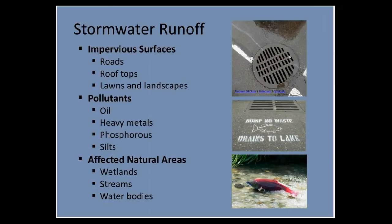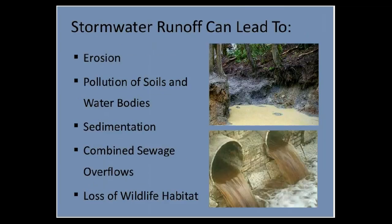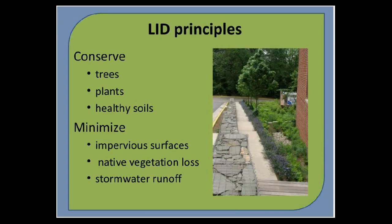So why are we using LID and why is stormwater bad? Stormwater runoff is the result of rainfall on impervious surfaces such as roads and rooftops, where it picks up pollutants and carries them to local waterways. Stormwater runoff is one of the largest sources of pollutants in urbanized areas of Washington State and is the largest contributor of pollutants entering the Puget Sound. Stormwater runoff can lead to erosion, pollution of soils and water bodies, sedimentation, combined sewage overflows, and loss of wildlife habitat.